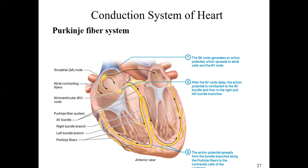Once these action potentials are generated, the signals travel through the heart muscle in a directed format known as the Purkinje fiber system. First, a signal passes from the right atrium over to the left atrium, so both contract almost simultaneously. Then the signal passes through the AV node and down the intraventricular septum, where it branches — one branch stimulates the right ventricle to contract, and the other branch stimulates the left ventricle to contract.